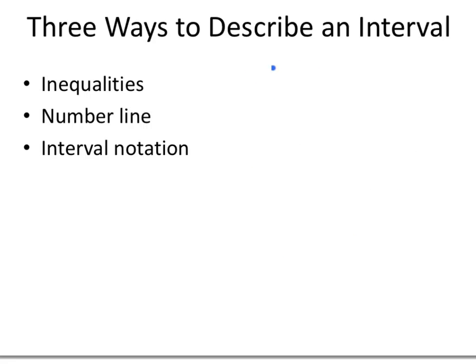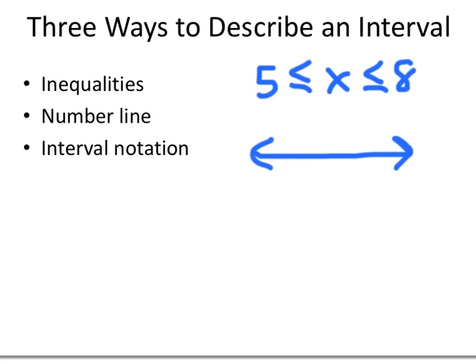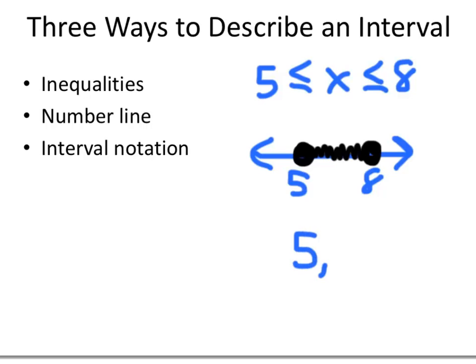What if I want to include both endpoints? For the numbers between 5 and 8, including both 5 and 8, the inequality is 5 is less than or equal to x is less than or equal to 8. On the number line, I put a filled-in dot at 5 and a filled-in dot at 8, and shade everything in between. In interval notation, I write 5 comma 8 with square brackets around both numbers: [5, 8].